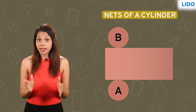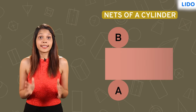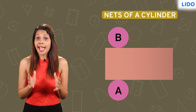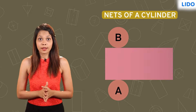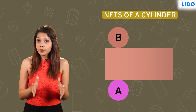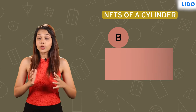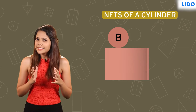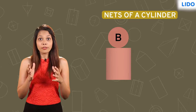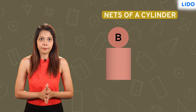Observe the given arrangement of the two dimensional shapes. It has two circular faces and one rectangular face. With circle A at the bottom as the base, let's roll the rectangular face such that its edge meets the edge of the circle and overlaps along its length.